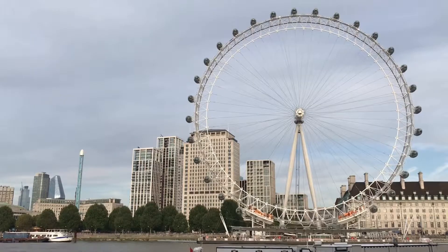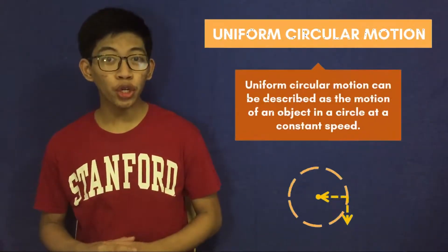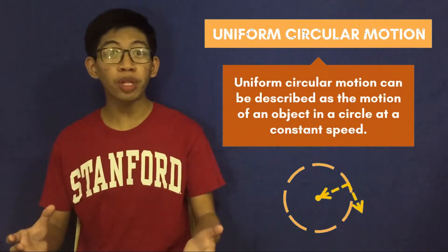In order to understand how these things work, let's talk about uniform circular motion. Uniform circular motion is described as a movement of an object on a circular path at a constant speed.